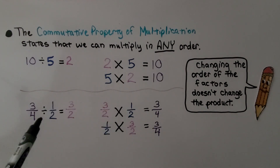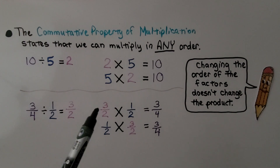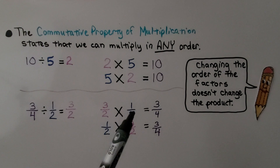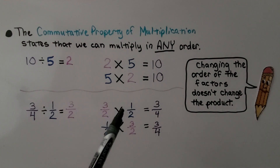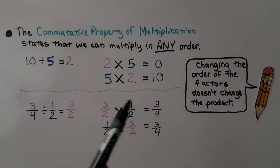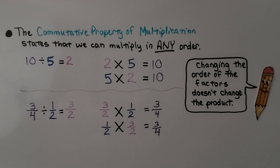Same with 3 fourths divided by 1 half equals 3 halves. We can write 3 halves then 1 half, or we can write 1 half and then 3 halves. So we can have 1 half as the multiplier or write it as the multiplicand. The order of the factors doesn't matter.